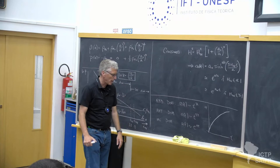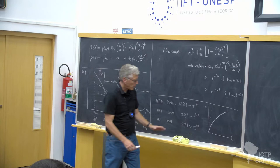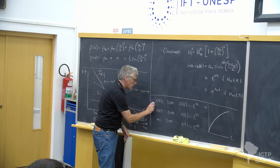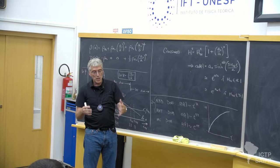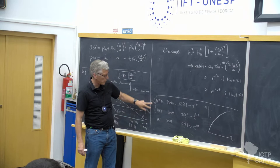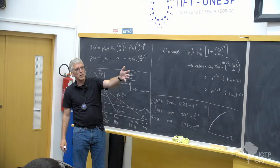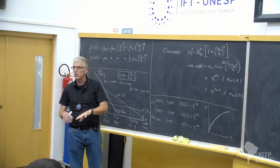Matter gives a similar story but the power changes — it's two-thirds rather than one-half. Vacuum domination is qualitatively different: radiation and matter are concave to the right, meaning a-dot-dot less than zero, so they're decelerating expansions. For the vacuum, a-dot-dot is positive — that's an accelerating expansion — related to the fact that if the energy density of the vacuum is positive, the pressure must be negative.